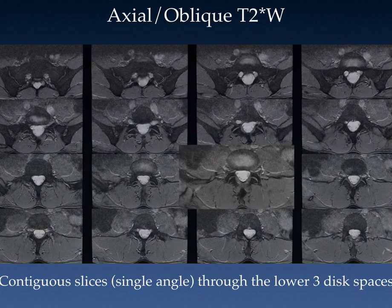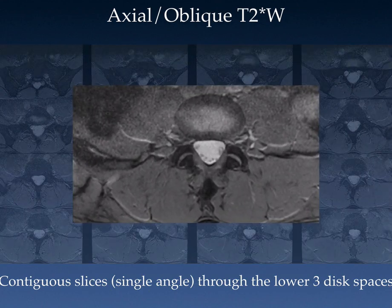As you can see, we've got good contrast between the posterior intervertebral disc and the CSF. You can see the nerve roots quite well, as well as the ligamentum flavum and the facet joints.